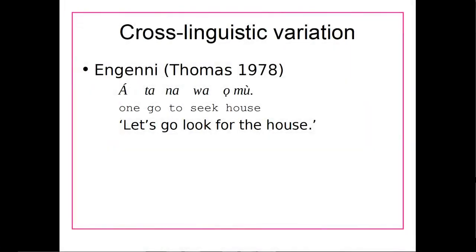There is a bit of cross-linguistic variation in how the world's languages treat morphemes. Some languages will have a lot of morphemes in one word; other languages might have one morpheme per word only. For example, in Emgeni, the phrase translated as 'let's go look for the house' is basically their word for 'now,' their word for 'go,' their word for 'two,' the word for 'seek,' and the word for 'house.' They have basically one bit of meaning per word — one morpheme per word — so we can't really break that up into smaller bits of meaning; it's already as small as it can go.